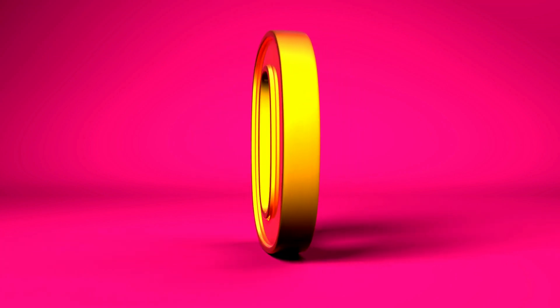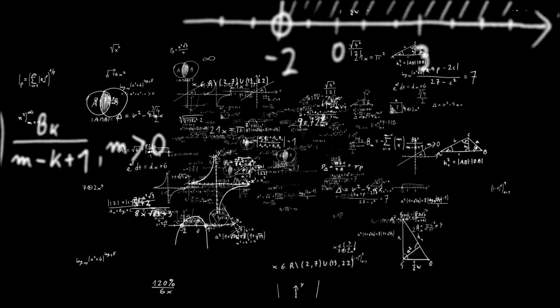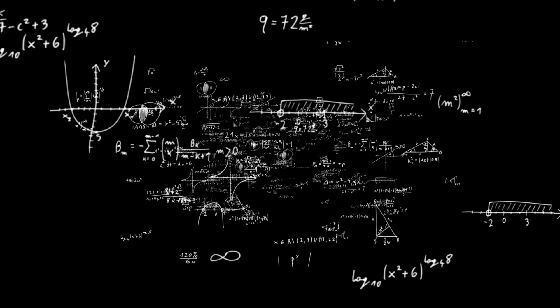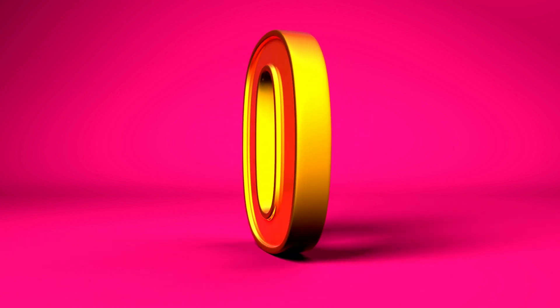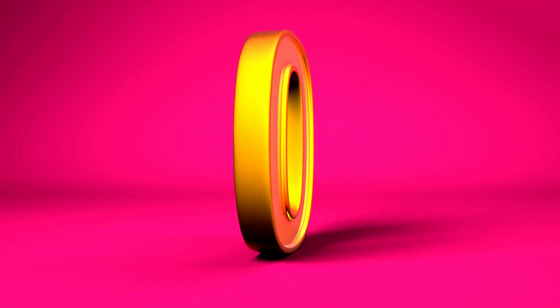Zero, the most mysterious number in the history of mathematics. This number itself has no value, but if you use it after any other number, the value of that number increases.